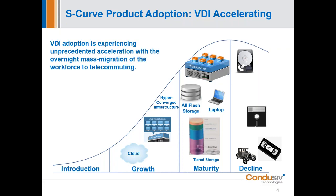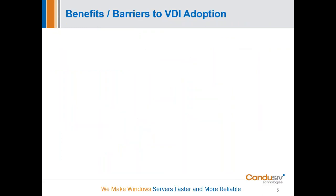What we have right now in our current environment is a hyper-acceleration of VDI adoption because of the mass migration to home offices. We were very low in that growth curve at the beginning of January, and now we are in a hyper-accelerated state where people are really scrambling to make this happen.